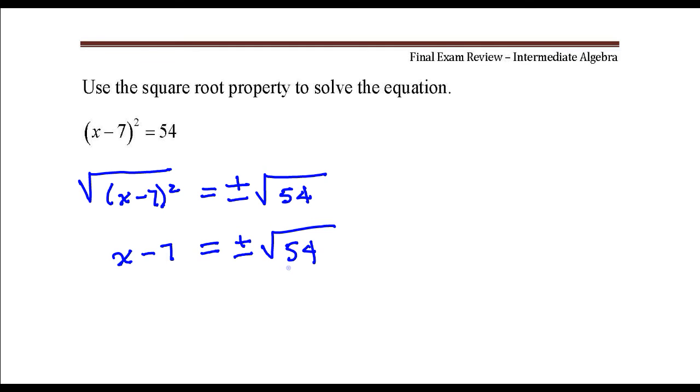The square root of 54 can be simplified. Square root of 54, I want to write that as the square root of 9 times 6. There's other ways to write 54 but this is the best way to write it, 9 times 6. I'm writing this as a product of two numbers and one of the numbers is the largest perfect square which is 9.